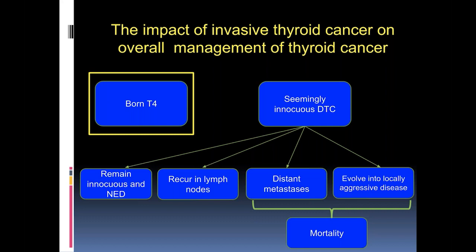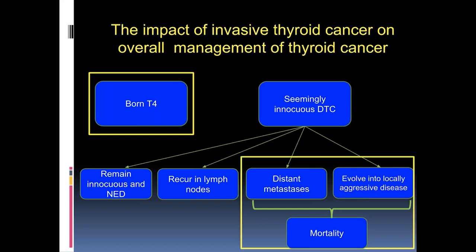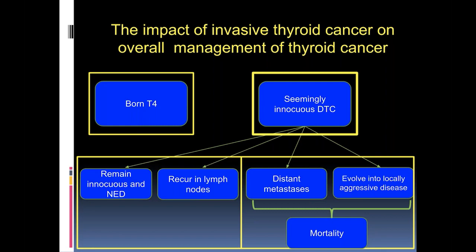But there is another cohort of patients who have seemingly innocuous differentiated thyroid cancer whose disease will take one of four different courses: either remain innocuous and remain NED, recur regionally in lymph nodes that we can readily manage, go on to manifest distant disease, evolve into locally aggressive disease, and ultimately be at risk of disease-specific mortality. The impact of this cohort influences our approach to this entire group of patients.